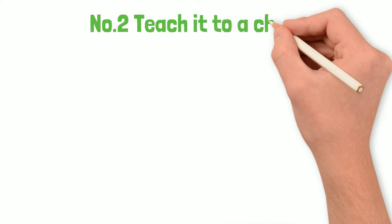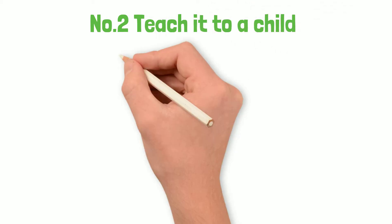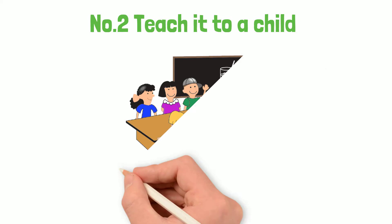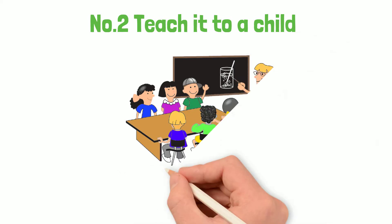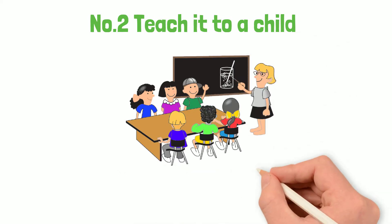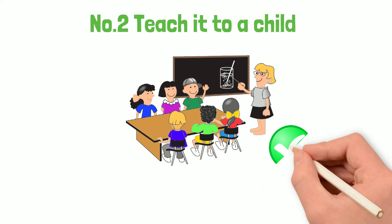Step 2: Teach it to a child. This is the most important step. Whatever you have learned in step 1, try to explain it to a 5-year-old. If you can make the child understand, that means you have mastered the subject.